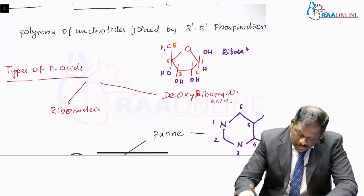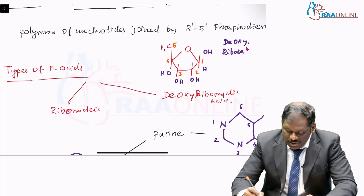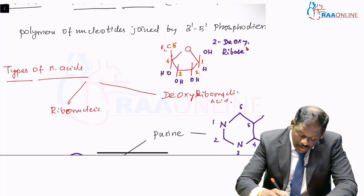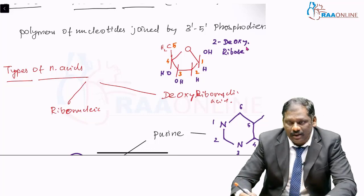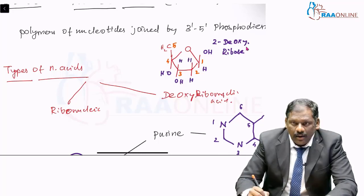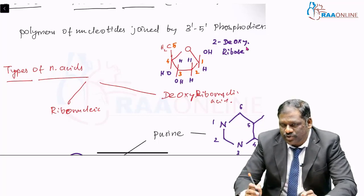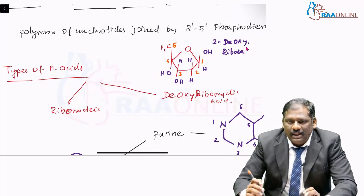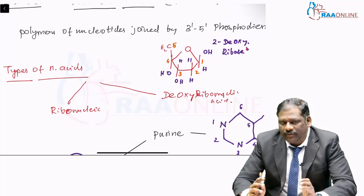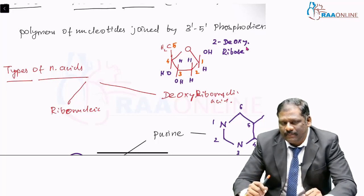Now, what do you mean by deoxyribose? You are removing an oxygen group. This deoxyribose is nothing but 2-deoxyribose. It means you are going to remove the oxygen from the second position, second carbon. So it basically becomes H. This is a 2-deoxyribose sugar, a pentose sugar.